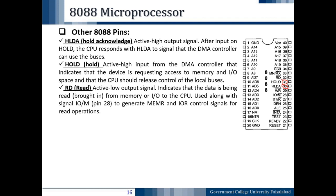The next pin is the Read pin RD bar, pin number 32. The bar on the pin indicates it is an active low output signal. It indicates that data is being read from the memory or IO to the CPU. It is used along with the IO/M bar signal to generate the memory read or IO read control signal for read operations.